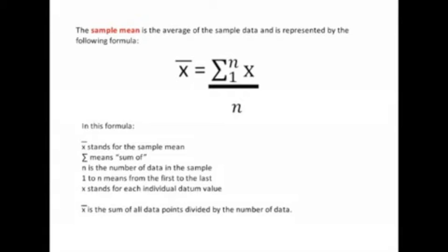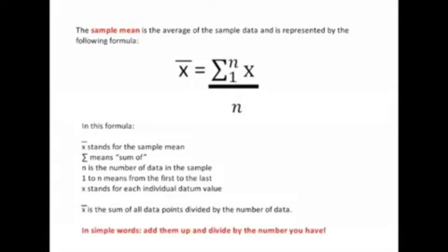We had a population mean, or the average of the population data. We also have a sample mean, which is the average of the sample data. It is represented by an X with a line across the top of it — that is pronounced X-bar. X-bar is equal to: add up all the individual data points and divide them by the number in the sample. That sideways M, or sigma, means sum of. Lowercase n is the number of data in the sample. 1 to n means from the first to the last. X stands for each individual data value. X-bar is the sum of all data points divided by the number of data. Add them up and divide them by the number you have. Based upon popular request, I will not sing.